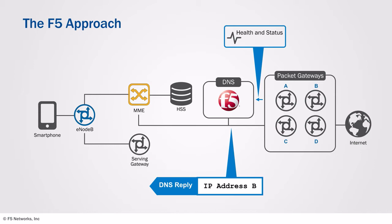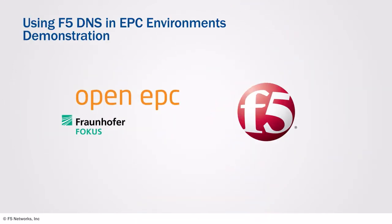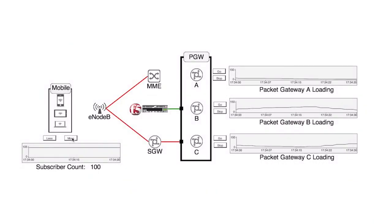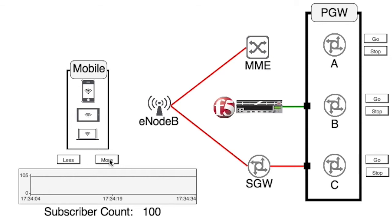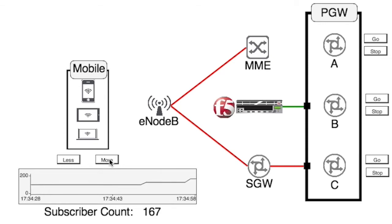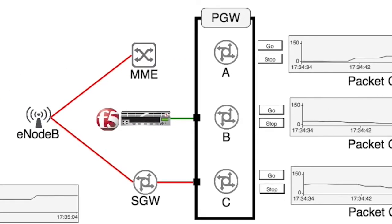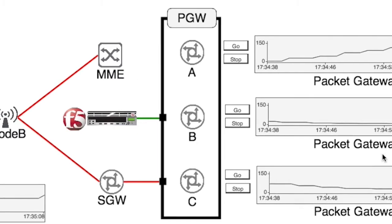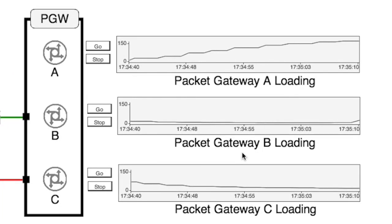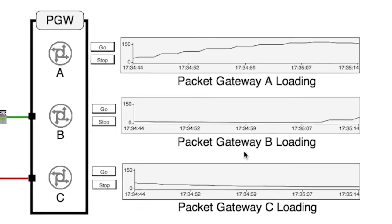What now follows is a demonstration of F5 intelligent DNS using the Open EPC network simulation environment and BigIP GTM. Active subscribers are shown on the left, and the subscriber count can be increased or decreased to change the loading on the EPC network. In the center is the EPC, including the MME and the E Node B together with the packet gateways. Alongside each packet gateway is a graph which shows the loading applied in real time.